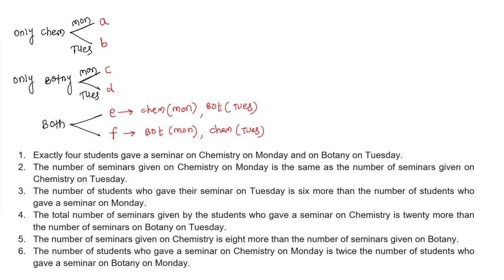Let's read the first statement: exactly 4 students gave a seminar on chemistry on Monday and botany on Tuesday. These are the students who gave seminars on both subjects — chemistry on Monday and botany on Tuesday. So from this, the value of E equals 4.